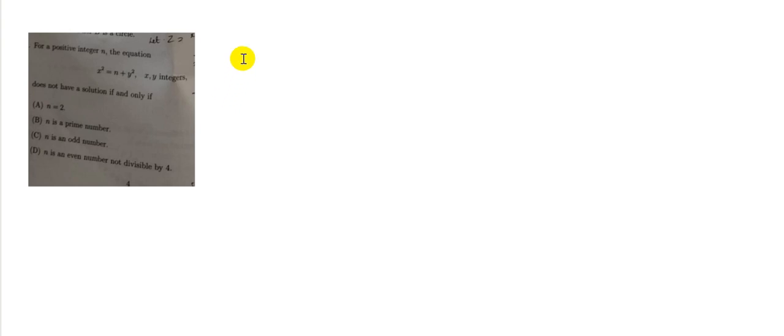This question talks about for a positive integer n, the equation x square equals n plus y square, where x and y are integers, does not have a solution if and only if. So x square is equal to n minus y square means x square minus y square equal to n. So x plus y into x minus y equal to n.